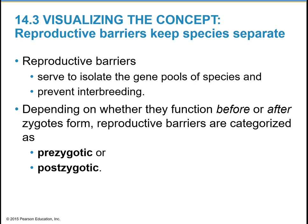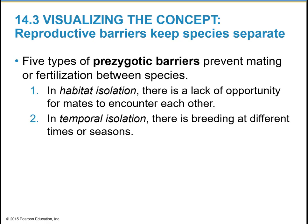Reproductive barriers can keep species separate. Reproductive barriers will serve to isolate the gene pools of species and prevent interbreeding. Depending on whether they function before or after the zygotes form — the zygote being a fertilized egg or a pre-embryo — reproductive barriers are characterized as either pre-zygotic or post-zygotic. The pre-zygotic barriers prevent mating to start with, so no mating can occur between species and no fertilization is possible.